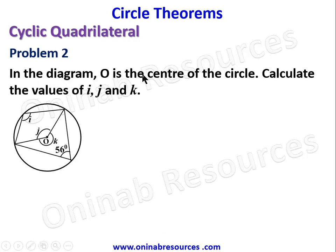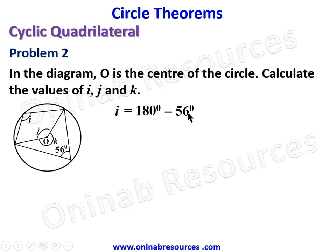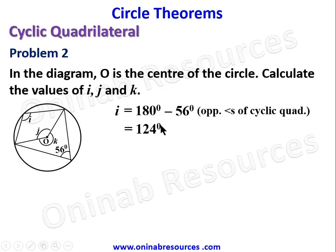Problem 2: in the diagram O is the center of the circle; calculate the values of I, J, and K. We immediately recognize this as a cyclic quadrilateral, so I equals 180 minus 56 degrees — opposite angles of a cyclic quadrilateral — which gives 124 degrees.